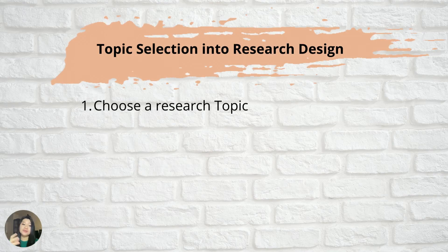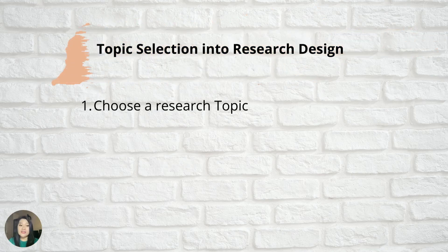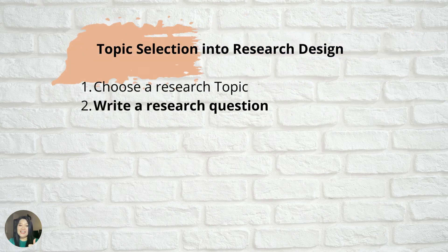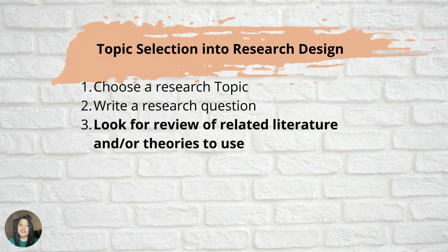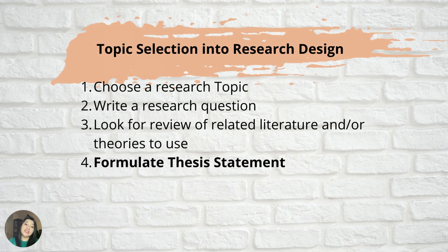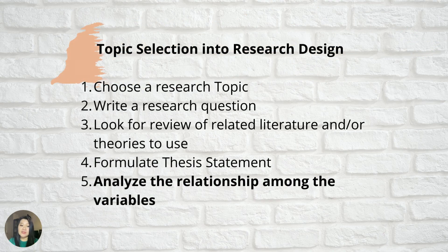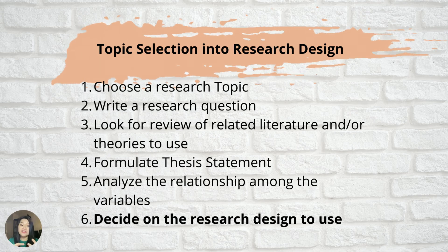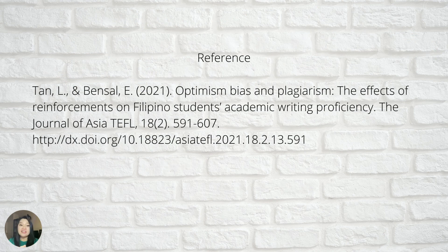To recap, the process of topic selection into research design involves the following steps: first, choose a topic; second, write a tentative research question; then look for a review of related literature and theories; formulate the thesis statement, which is the conceptualization of your research topic; analyze the relationship among the variables; and decide the research design to use to answer your research question. The reference for the last example is provided, and the link can be seen in the description box below.